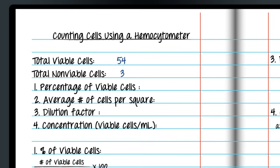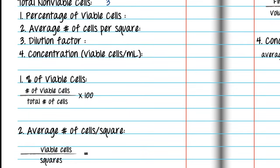Now that we have counted our cells, there are several calculations we need to perform. First, let's calculate the percentage of viable cells. Here's the formula. 54 viable cells divided by 57, the total number of cells, gives us 0.947. Multiply by 100 and the percentage of viable cells is 94.7%.